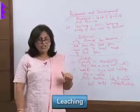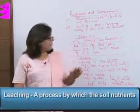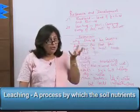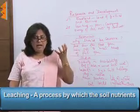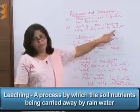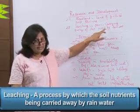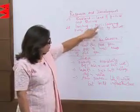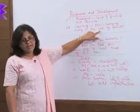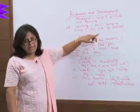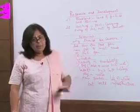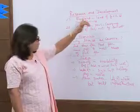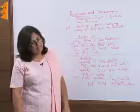Leaching is a process by which the nutrients of the soil are carried away by rainwater, making the soil less fertile. Whatever nutrients the soil has are washed away by rainwater — that is leaching. So we have seen both bad land and leaching as processes that reduce soil fertility.